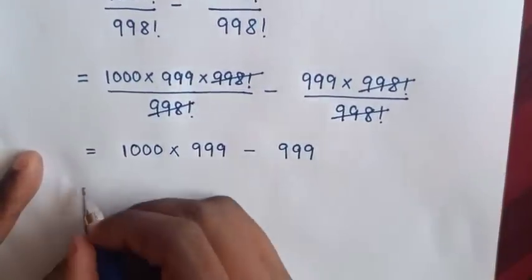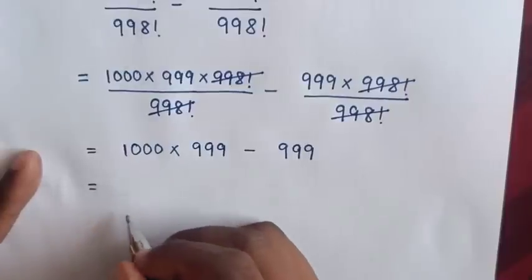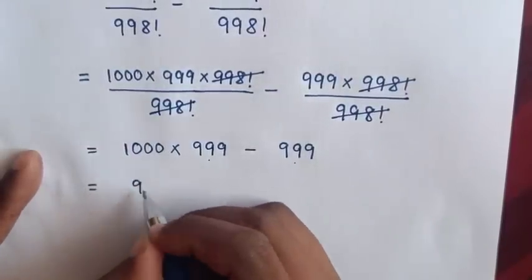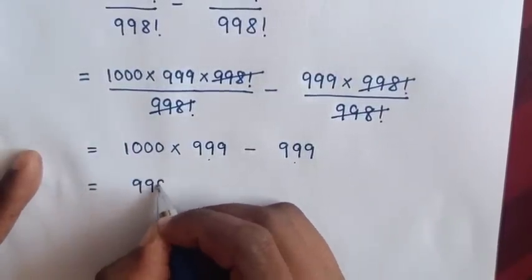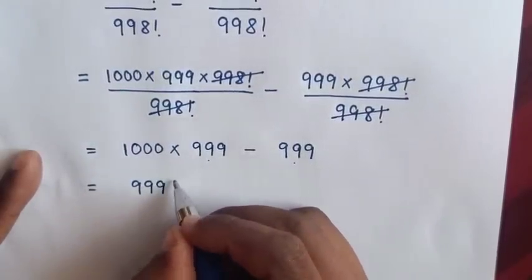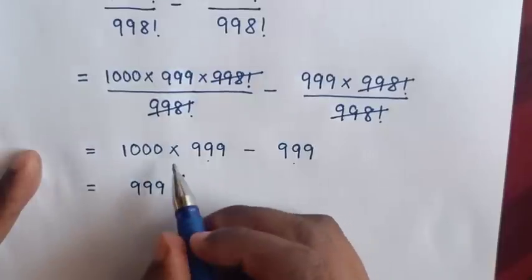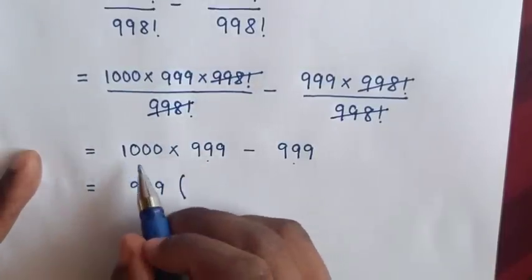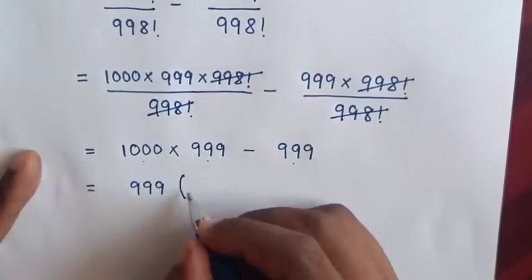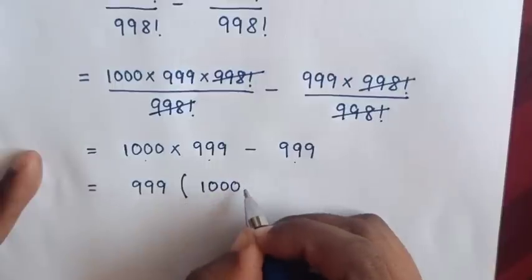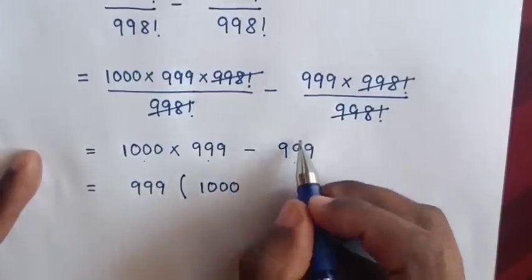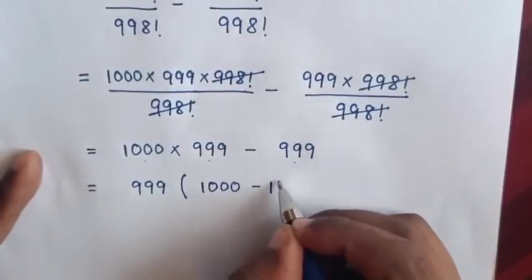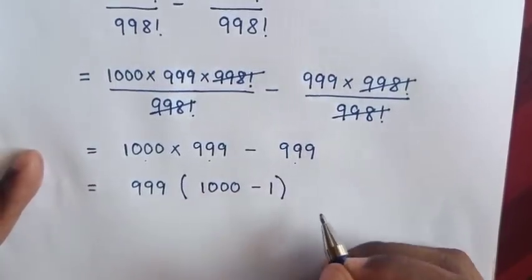Then 999 is common, so we take 999 out of the bracket. So this divided gives 1000, and this divided gives negative 1 in the bracket.